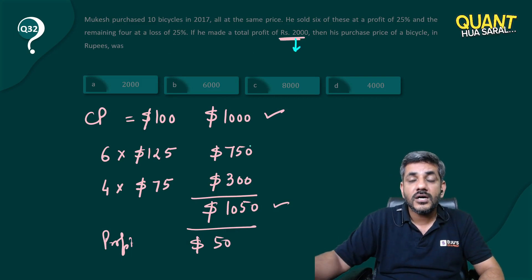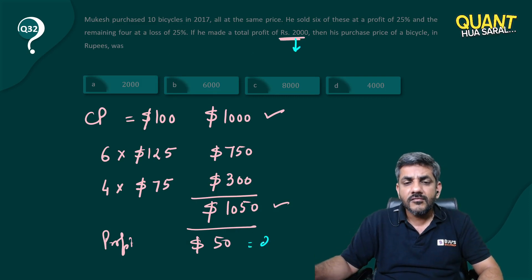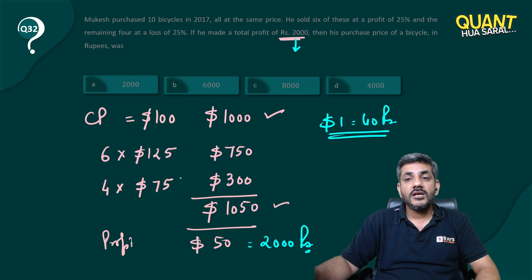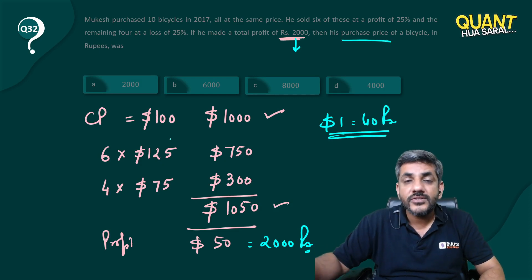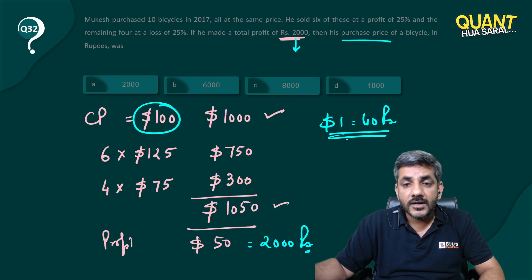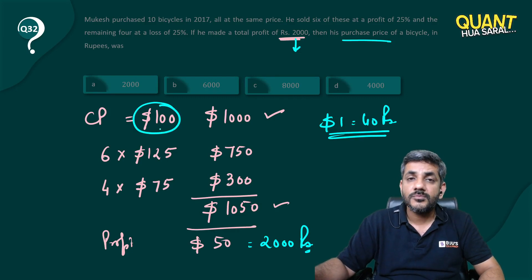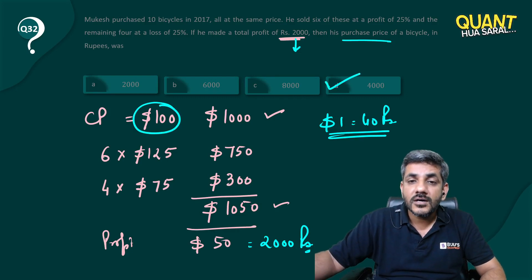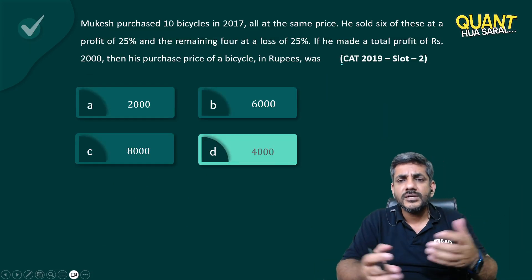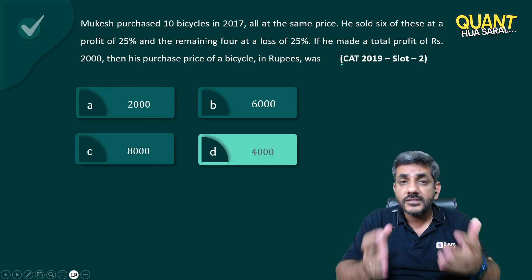The question says he made a profit of 2000 rupees. So 50 dollars equals 2000 rupees, which means one dollar equals 40 rupees. We assumed the purchase price is 100 dollars, and one dollar is 40 rupees, so 100 dollars equals 4000 rupees. That is the purchase price of a bicycle.